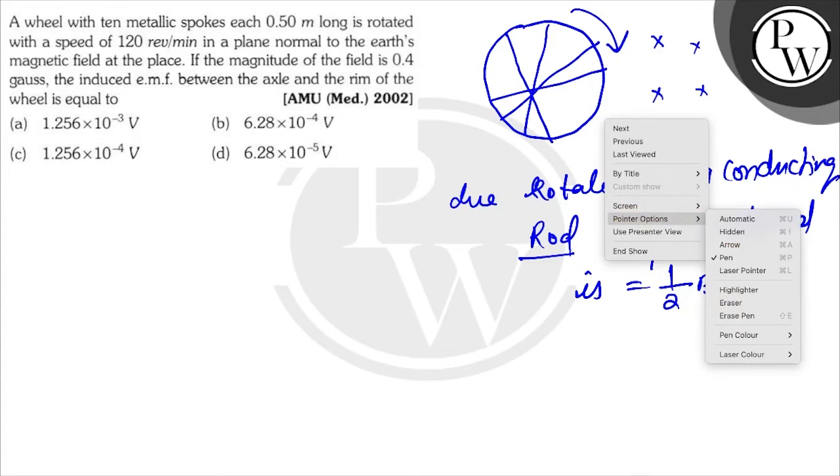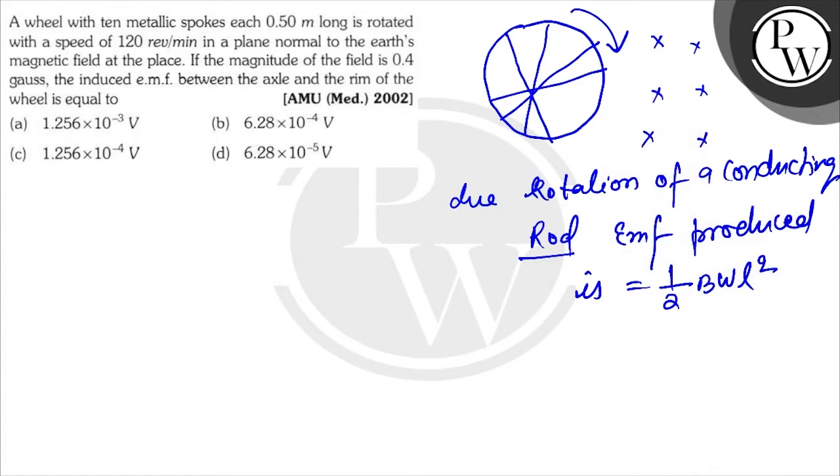For all of them, if you see, high potential will be here, low potential will be here. For this one, high here, low here. For this one, high here and low here. Similarly for all of them.